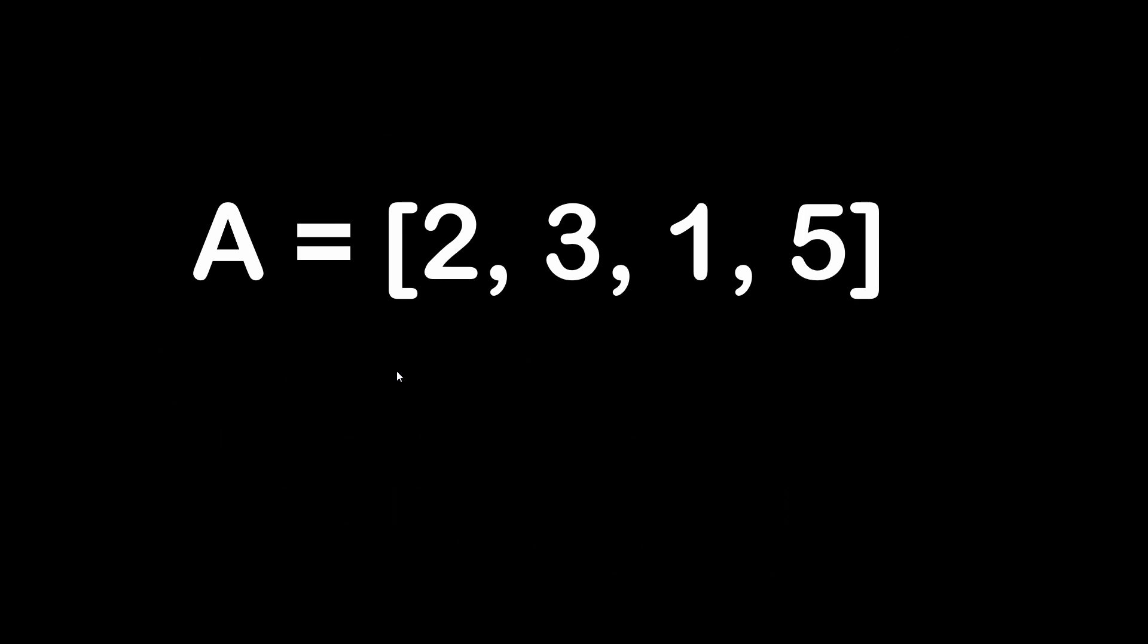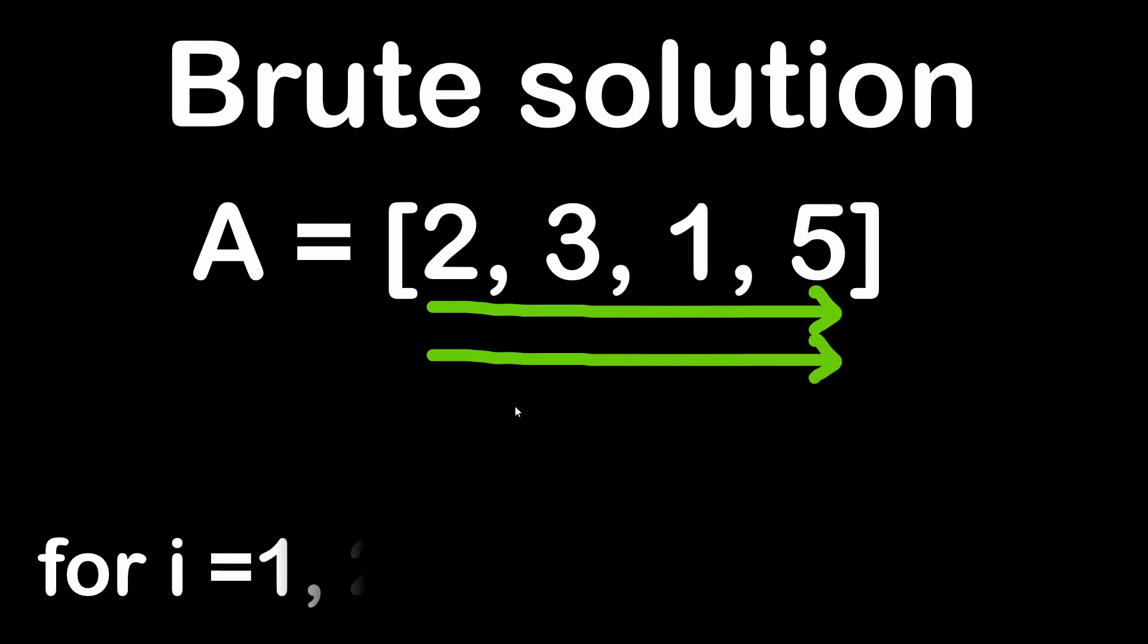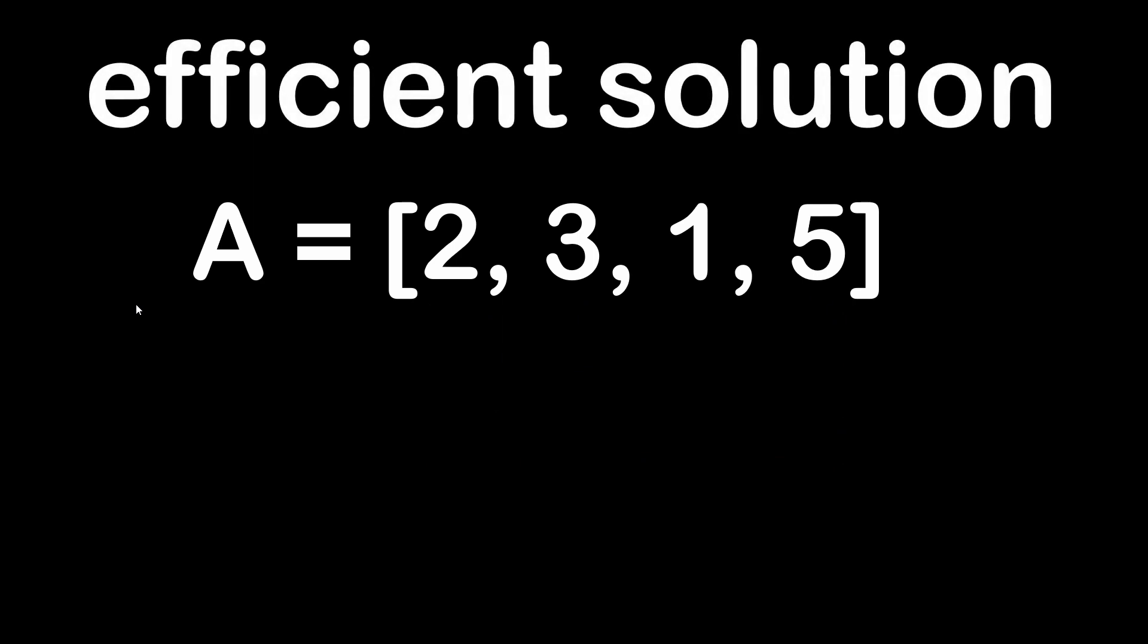For example here we are reading each element of the array for every value of i until we find the value of i that is not included in the array. Then we can break out of our loop and we have our result. But you can notice that we have read each element of the array four times. The better way of doing this is by using a more efficient algorithm.